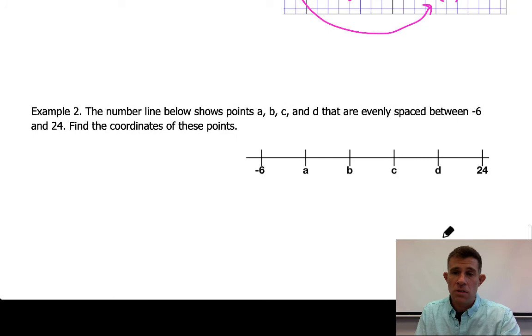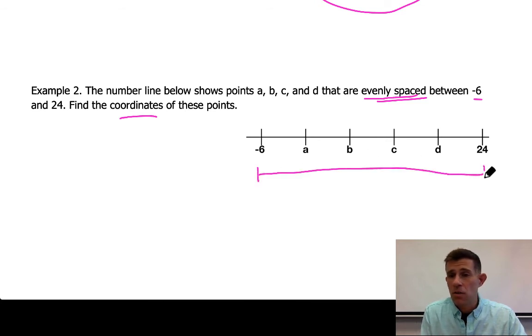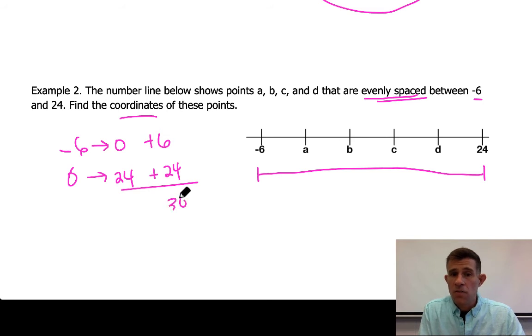So just one example problem here for us to take a look at that's going to involve a little bit of math here. It says a number line below shows points A, B, C, and D are evenly spaced between negative 6 and 24. Find the coordinates of these points. Now I hinted at what's going to be important here is finding the distance. So on a number line from negative 6 to 24, you want to think about the amount of space that you would cover traveling from negative 6 on the number line to positive 24. You need to go from negative to positive by first traveling through zero. So think about the space from negative 6 to zero. From negative 6 to zero, I would have to cover a total of six spaces. And then from zero out to 24, I would cover an additional 24 spaces. So that's going to be a total distance of 30 spaces.